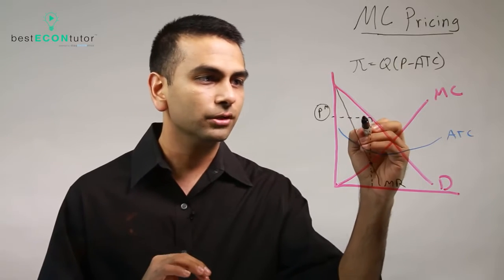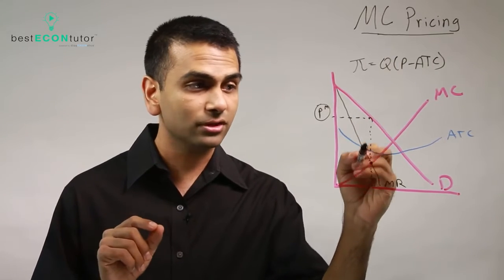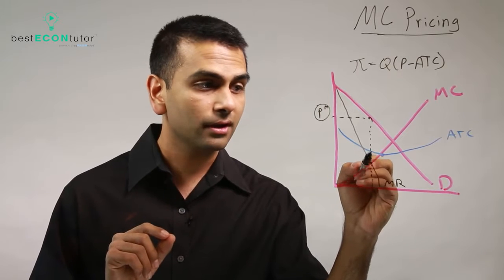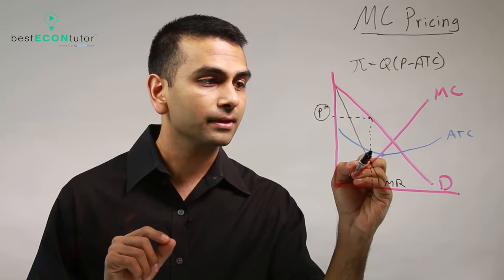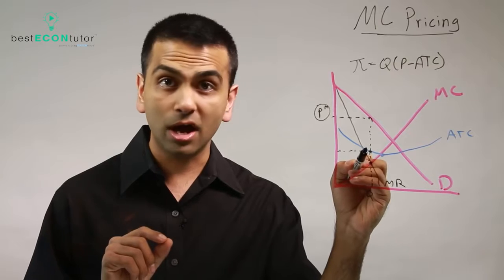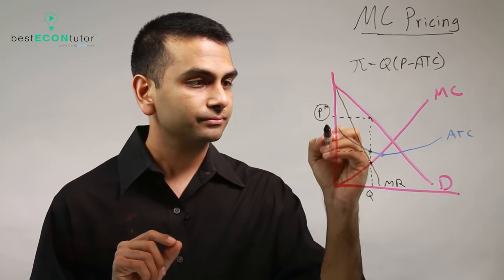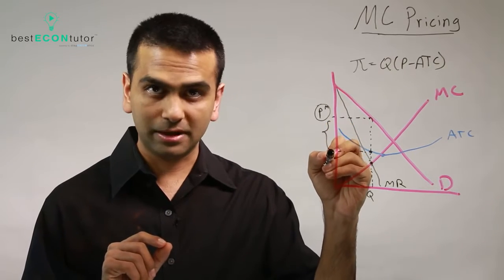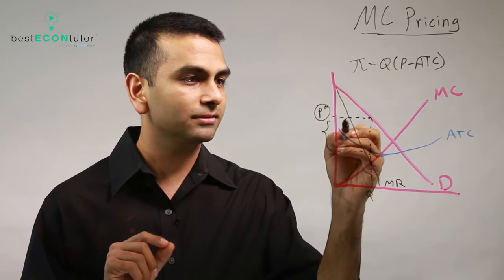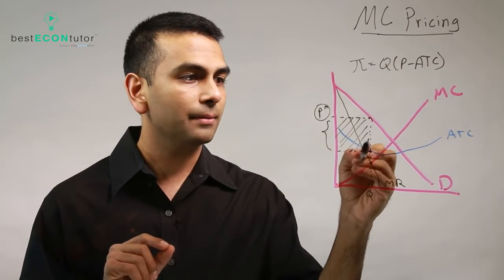So now what we have is your price is this much, but on average, that's where we look at the blue curve. At that quantity that you're selling, this is the average cost of production. So this gap is your per unit profit times the quantity—this is your overall profits if you are a monopoly.